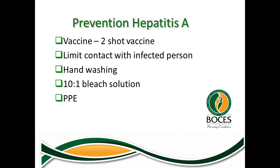There is prevention for hepatitis A. There are vaccinations — two shots — which limit contact with the infected person. Hand washing is a very important part of prevention. If you are disinfecting an area where someone is infected, you would use a 10-to-1 water-to-bleach solution and, as always, personal protective equipment.